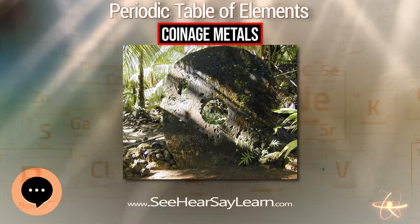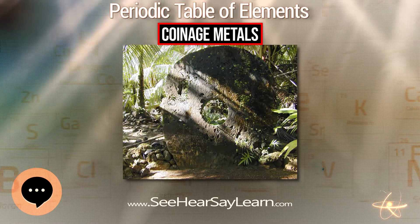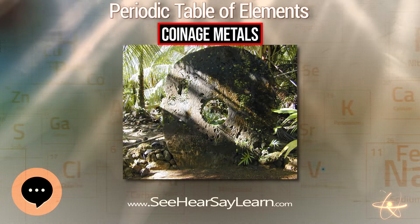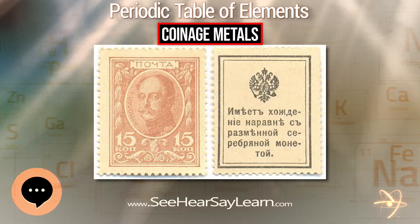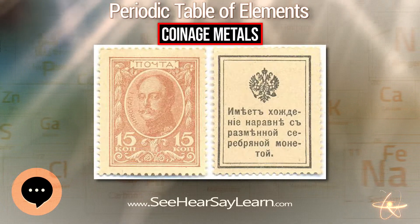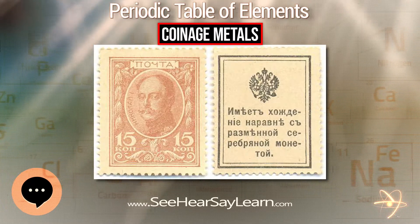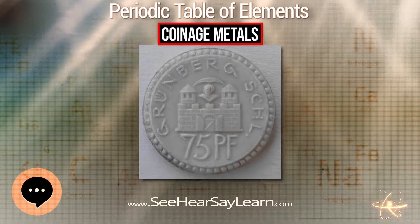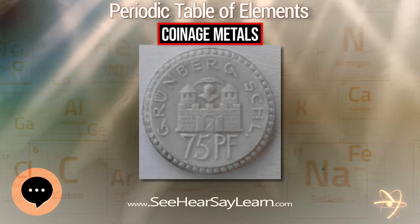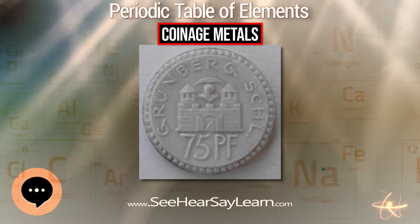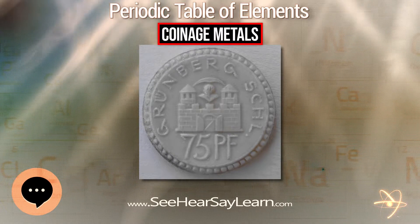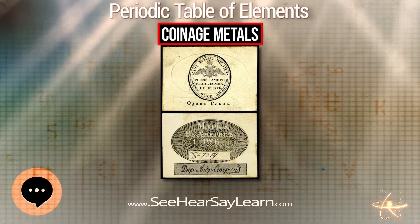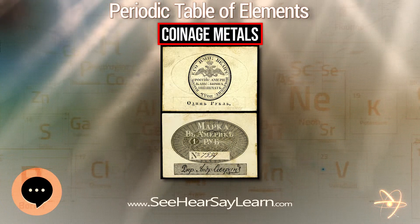The 24 elements named are: Al, Sb, C, Co, Cu, Au, Fe, Pb, Mg, Mo, Ni, Nb, Pd, Pt, Re, Ag, Ta, Sn, Ti, W, V, Zn, and Zr.